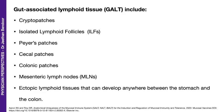The gut-associated lymphoid tissue is not one organ. They are a collection of organs of different types, which makes it complex yet very effective. They are the cryptopatches, the isolated lymphoid follicles, the Peyer's patches, the cecal patches, colonic patches, mesenteric lymph nodes, and ectopic lymphoid tissue that can develop anywhere between the stomach and the colon.